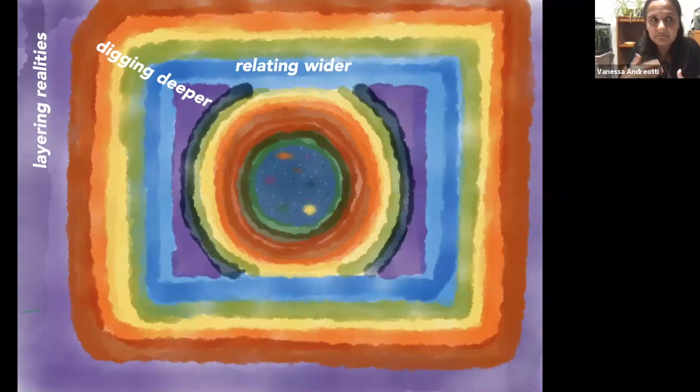that if we understand that we are not separate, that there are other capacities that our body has to deal with this collectively that need to be activated. So in our collective, the role of art is to activate these capacities, and we call them exiled capacities.